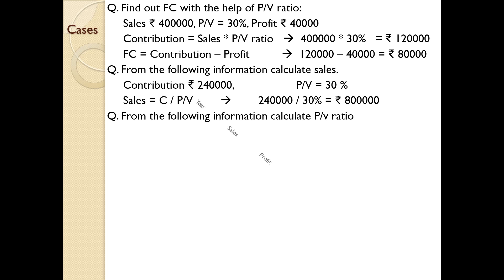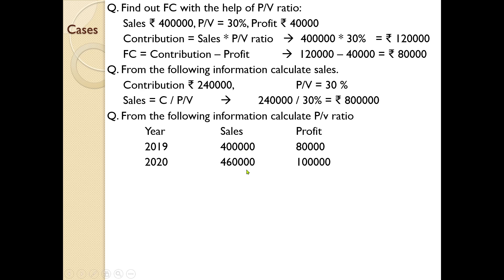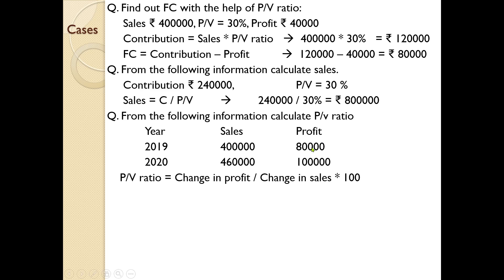From the following information, calculate PV ratio. Here, sales and profit are given. In 2019, sales was 4 lakhs and profit given was 80,000. During 2020, sales is 4,60,000 and profit is 1 lakh. PV ratio equals change in profit divided by change in sales into 100. We have learnt different equations for finding PV ratio; one such equation is used for this type of question. Change in profit means profit for the second year minus profit for the first year — that is 20,000 — divided by the change in sales.